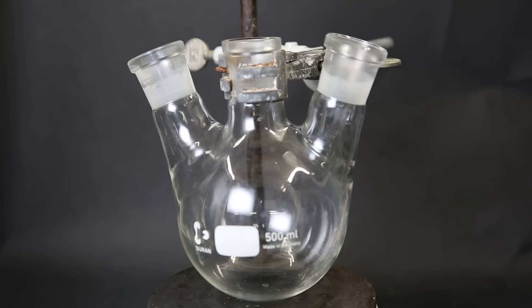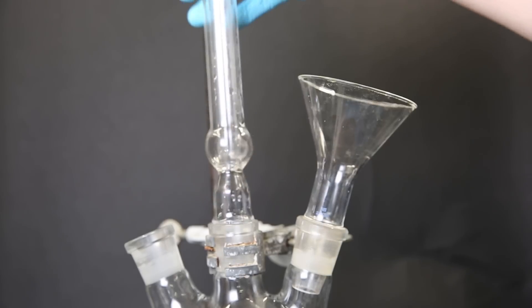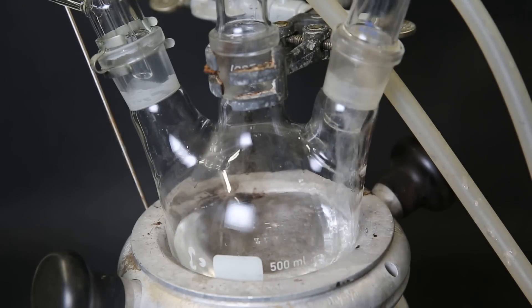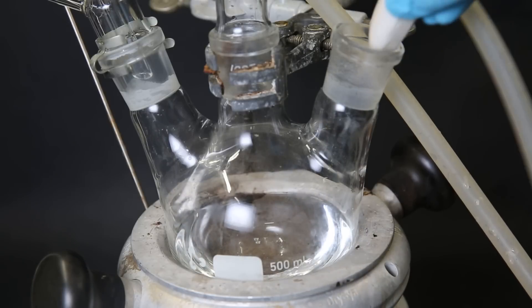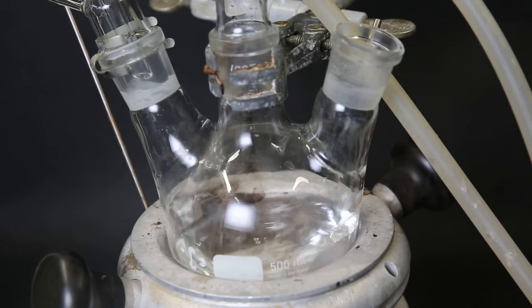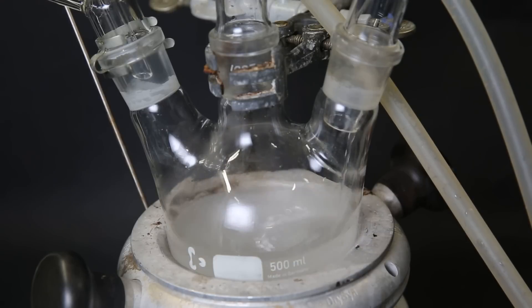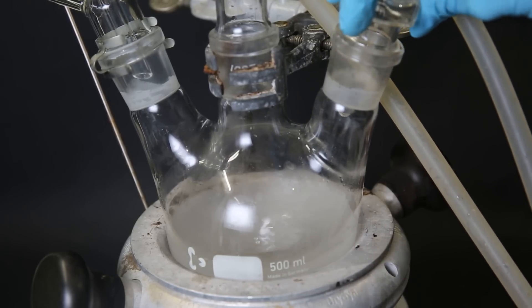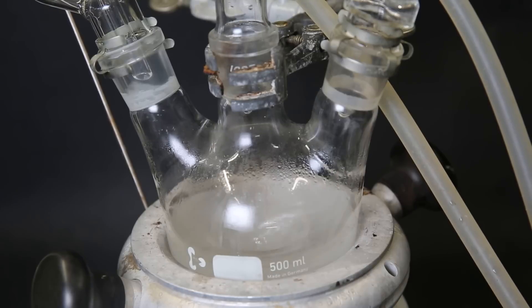While it is cooling down, I set up a 3-neck flask and attach a funnel, condenser, and dropping funnel. Then to the flask, I add in 27 ml of triethylene glycol and 170 ml of THF. Then I drop in a stir bar, and under strong stirring, I add the cooled down KOH solution to the flask. I then replace the funnel with a stopper and stir the mixture for 15 minutes until it develops a rusty brown-red color.